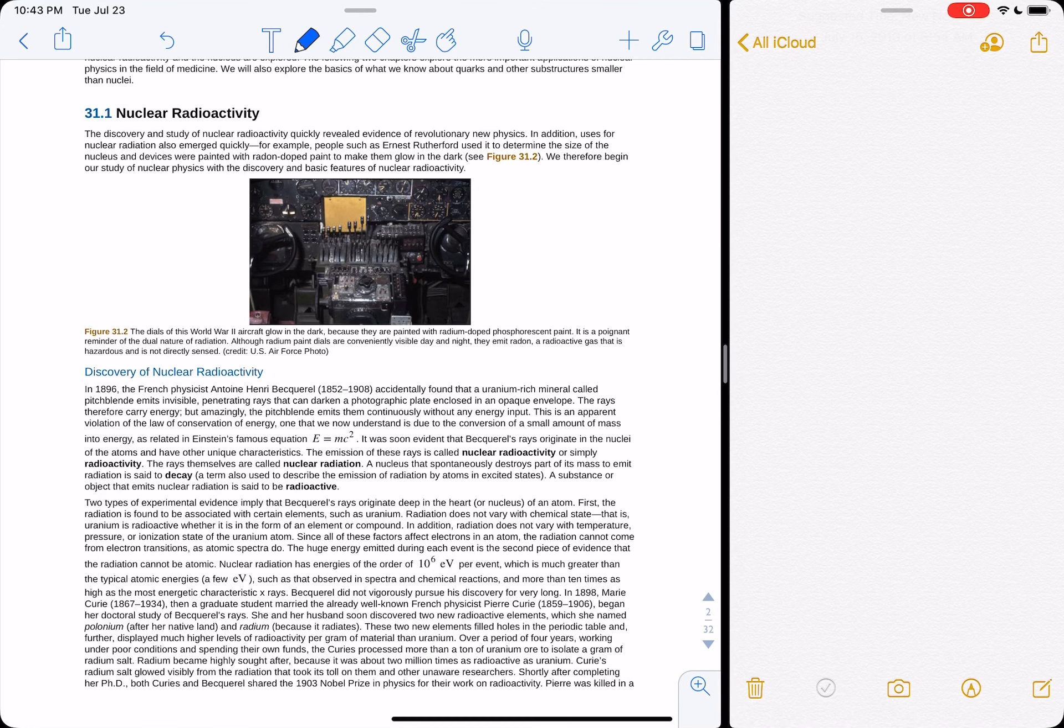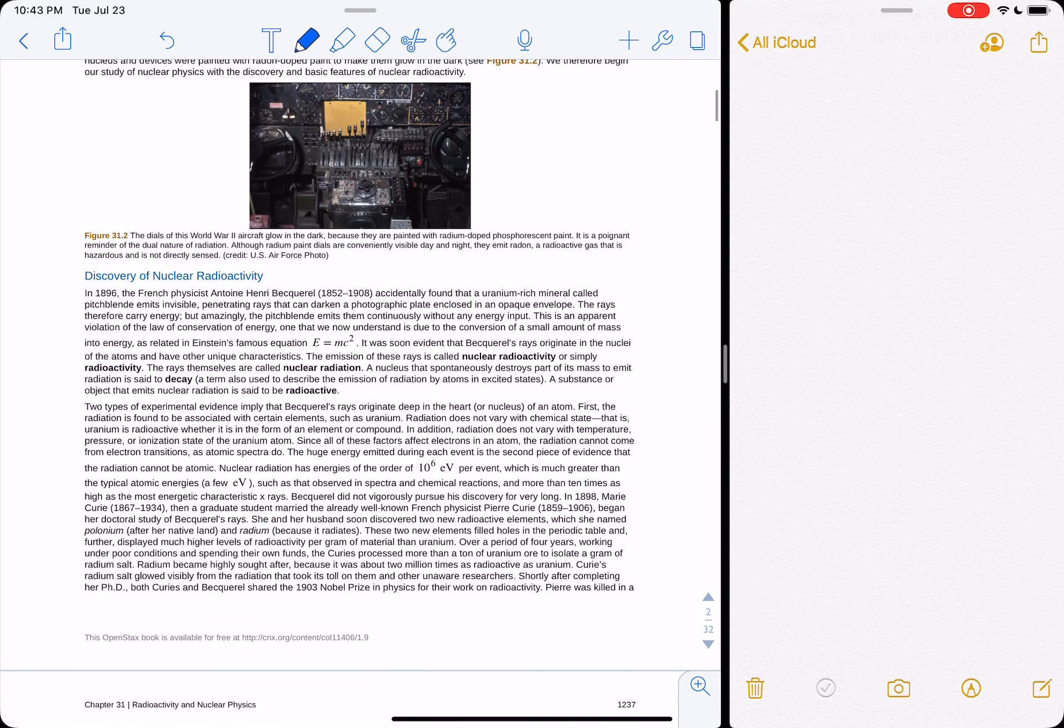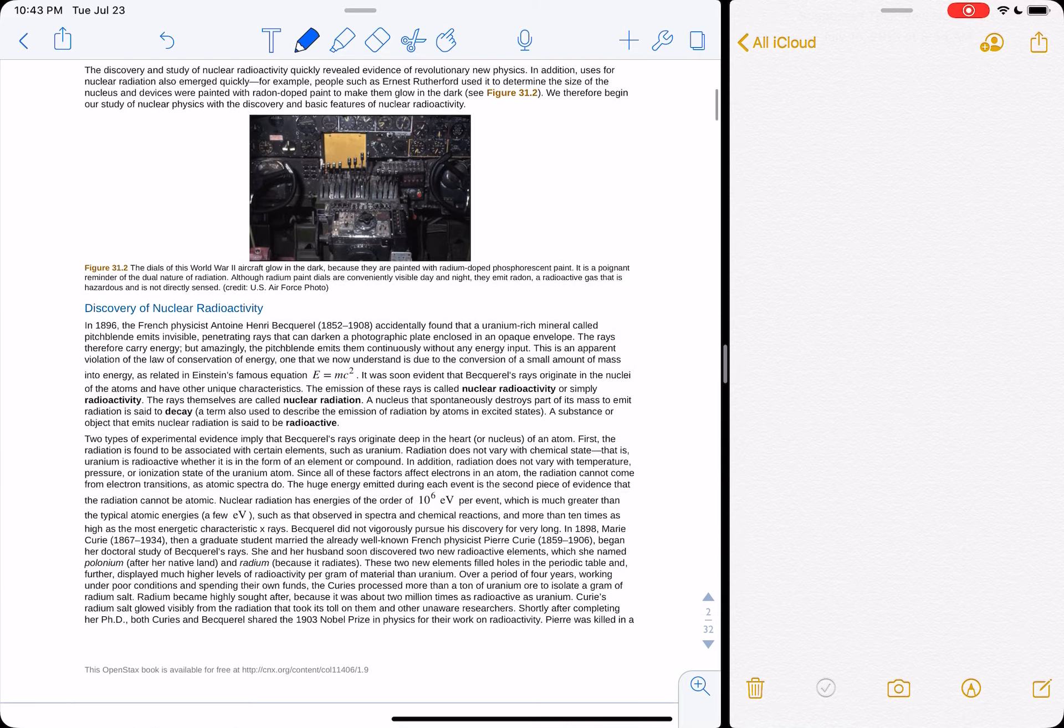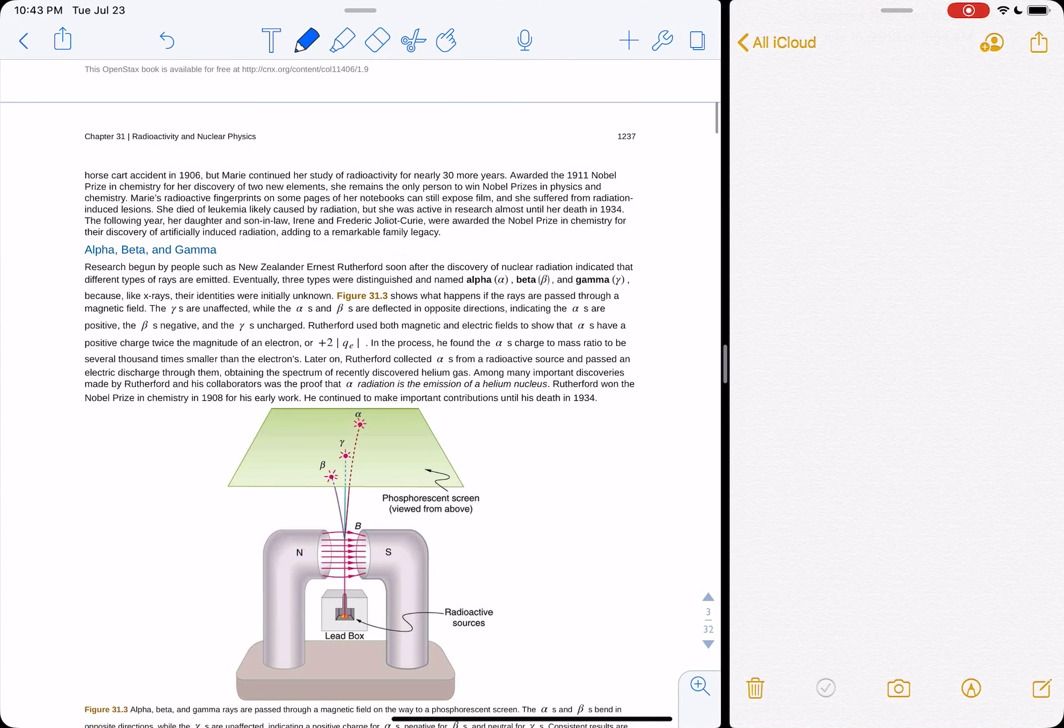Sometimes it's radiation, like x-rays or gamma rays. Sometimes it's particles, like alpha particles and beta particles. So the three types of particles are alpha, beta, and gamma.